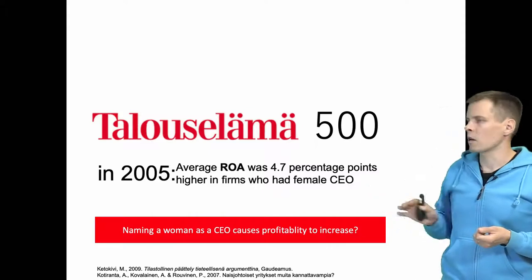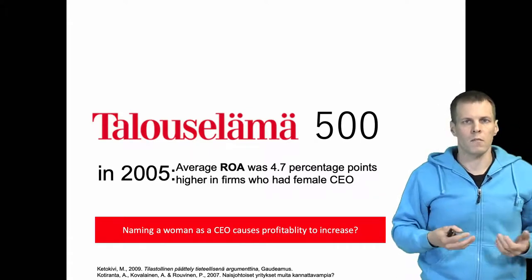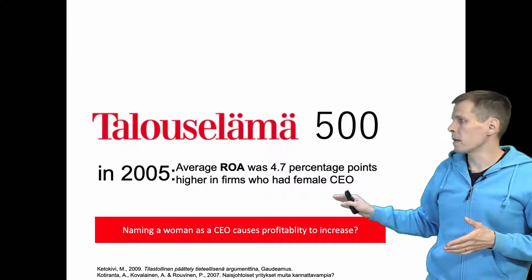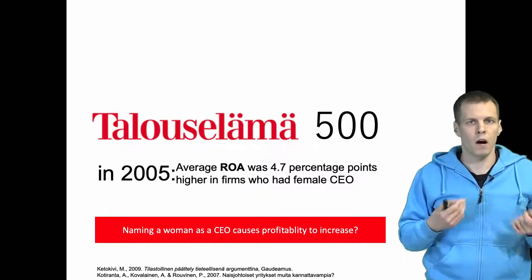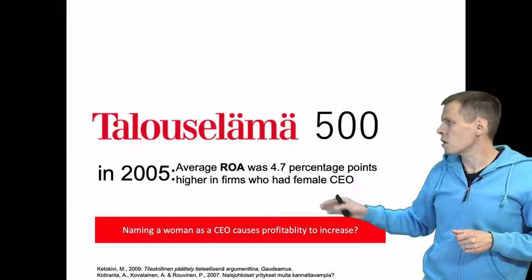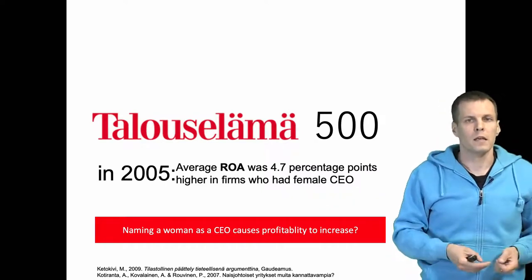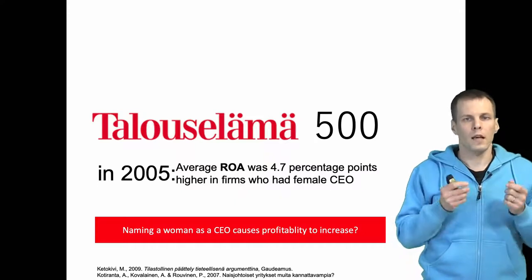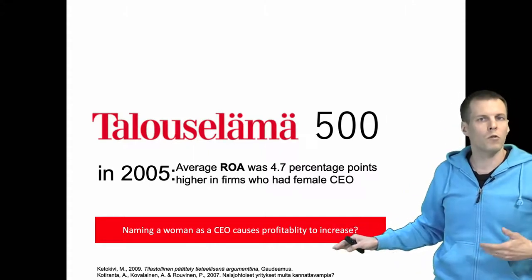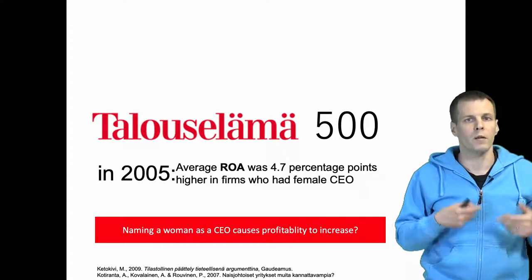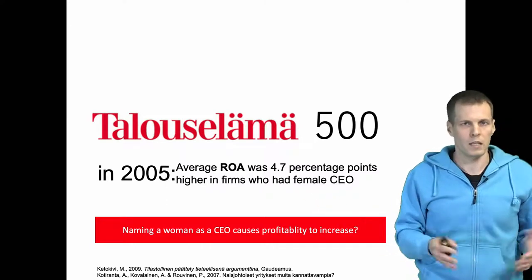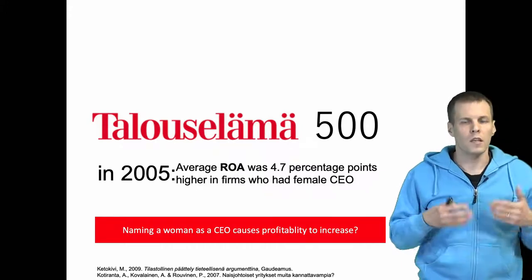This example comes from the Talouselämä 500 list, which is a list of 500 largest companies published by the Finnish Talouselämä business magazine. In 2005, there was a big headline that the average ROA of women-led companies was 4.7 percentage points higher than for men-led companies. People wanted to interpret this empirical finding as evidence that it is actually the female CEO who causes the profitability differences, and there were calls for having more women in CEO, board, and management team positions. But this is just an observation — it's not directly evidence of causality.